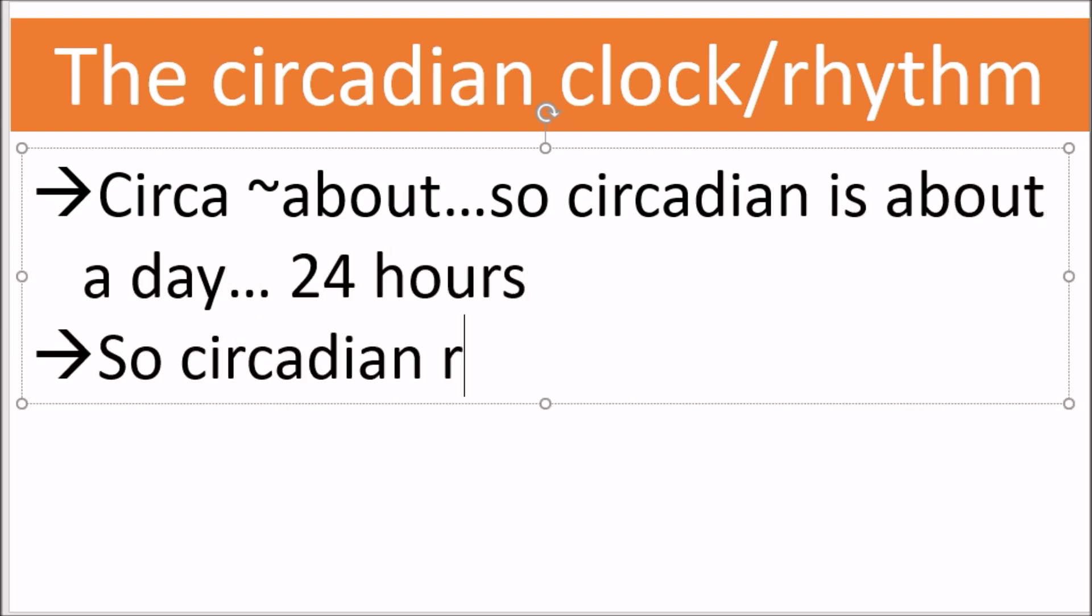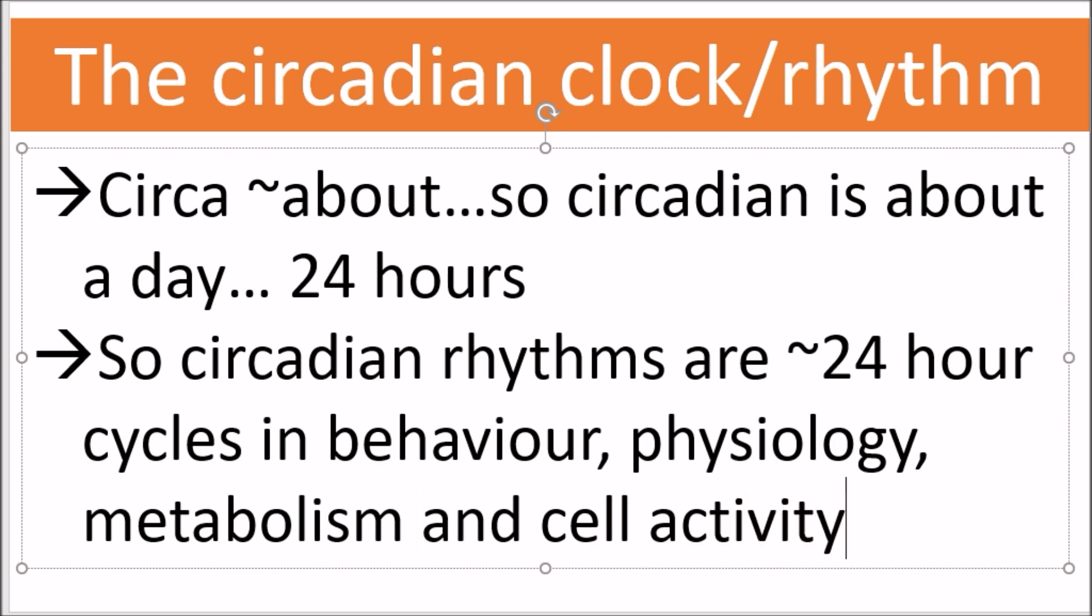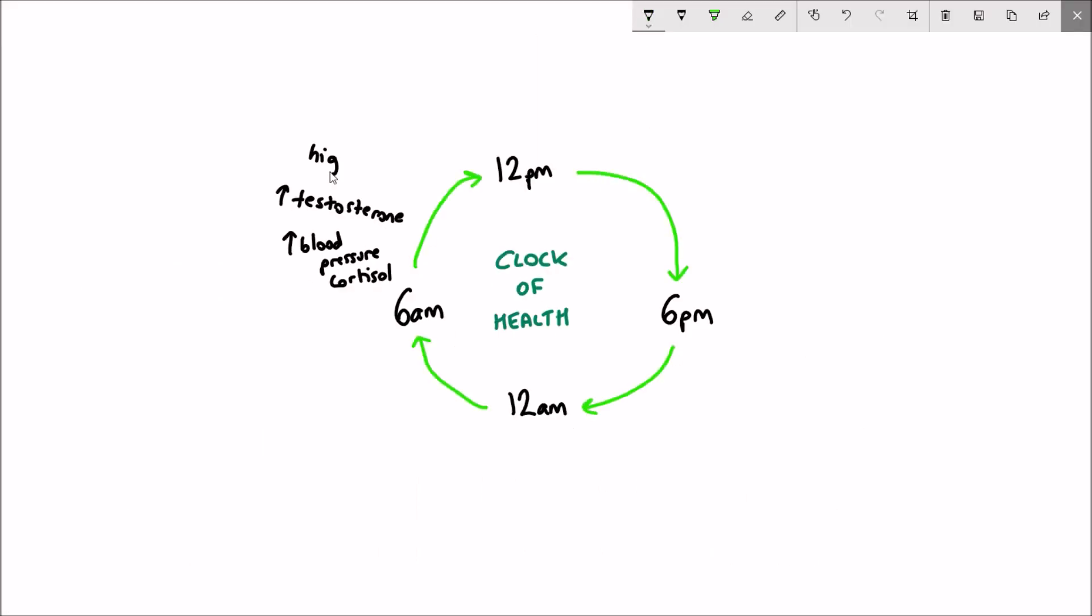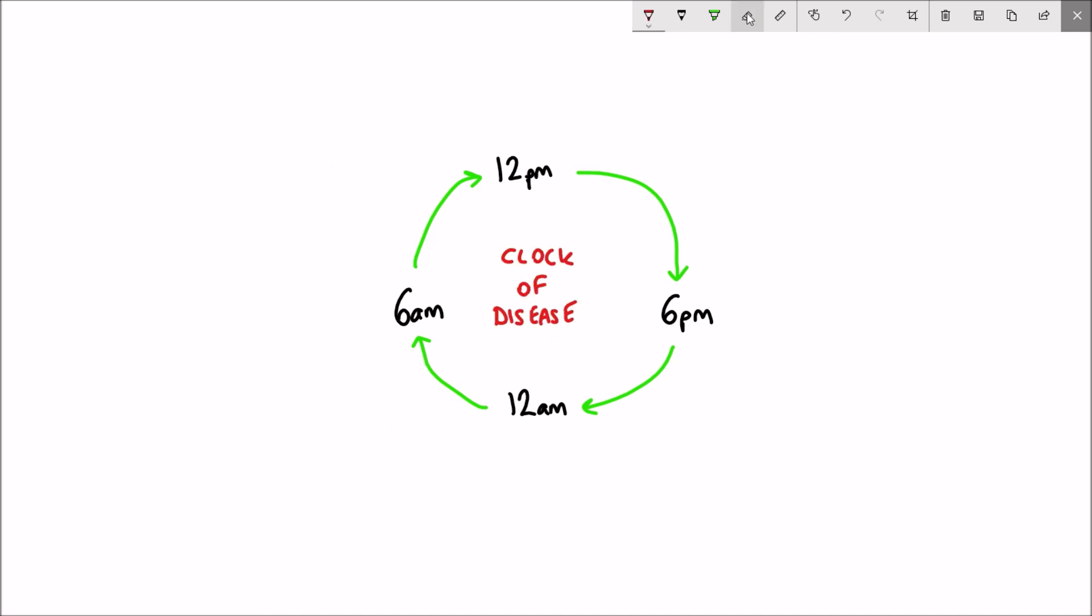The circadian rhythms are rhythms that occur roughly about a day and they're just changes in the body regarding behavior, physiology, metabolism and cell activity. And the reason that certain processes happen at certain times of the day is necessary to prepare organisms for the daily challenges.